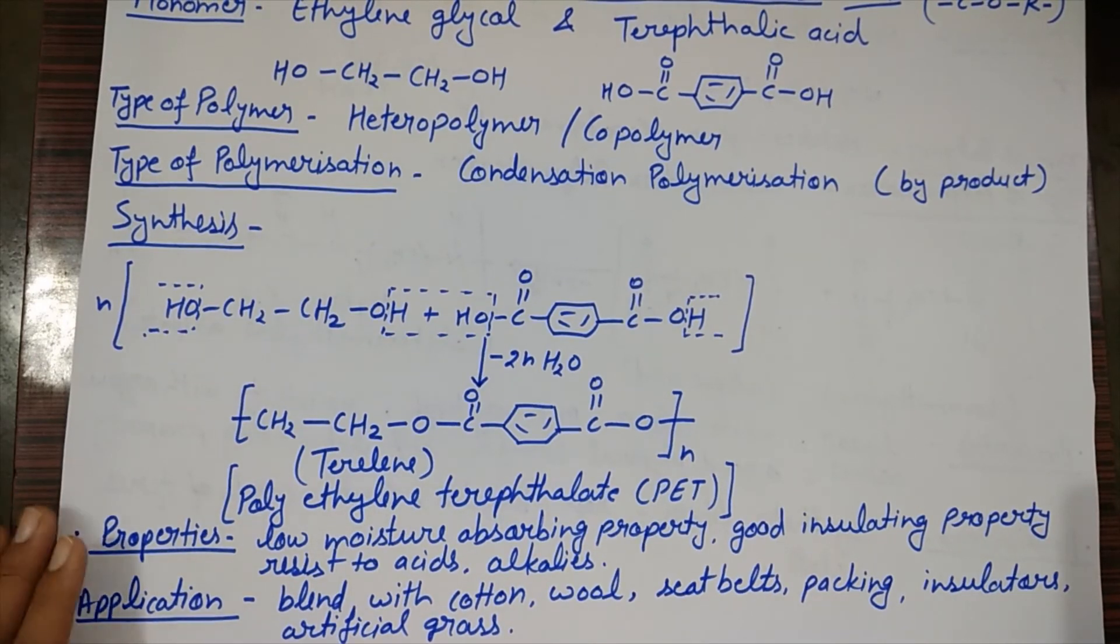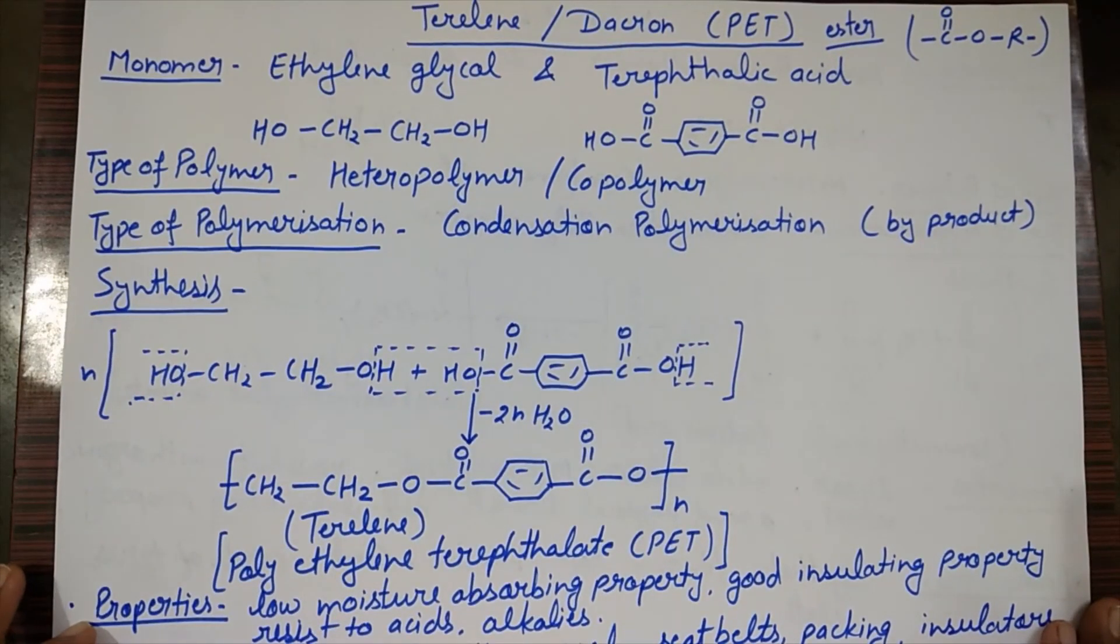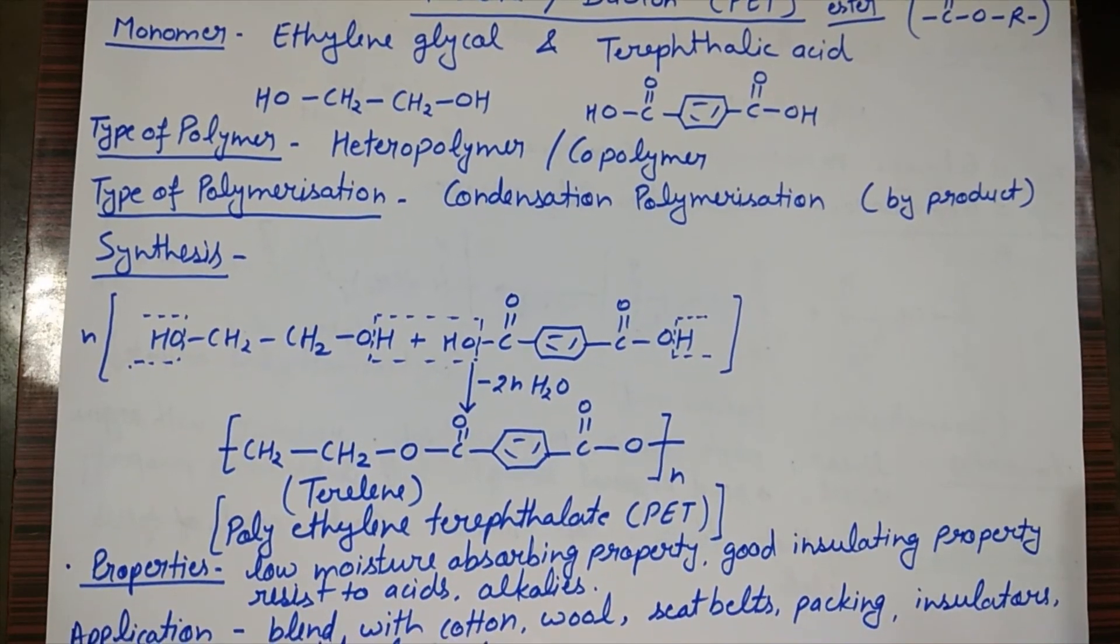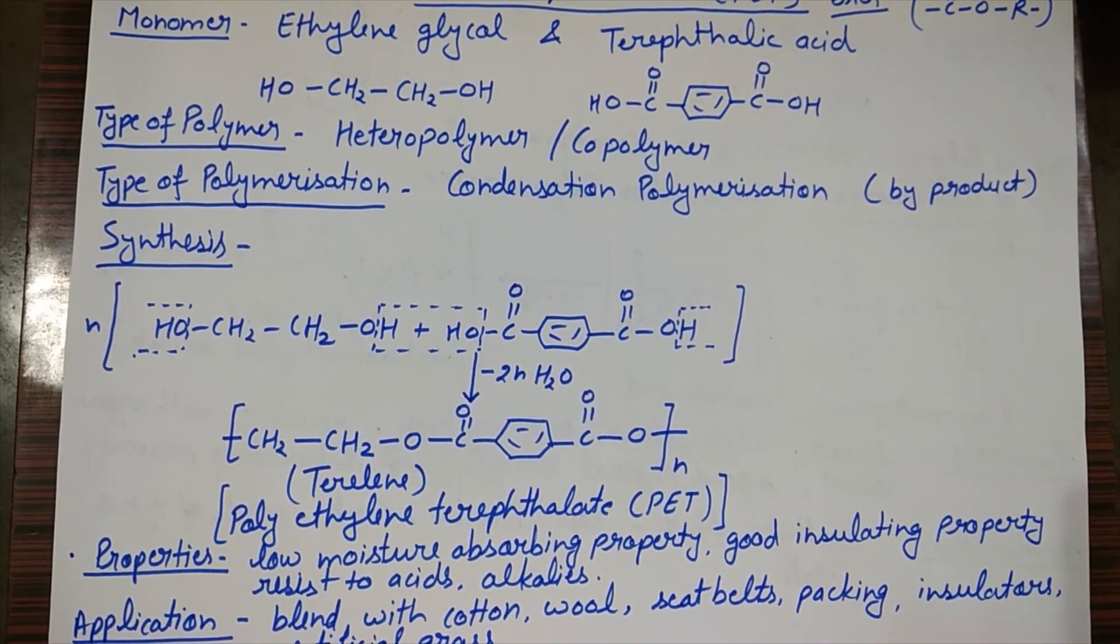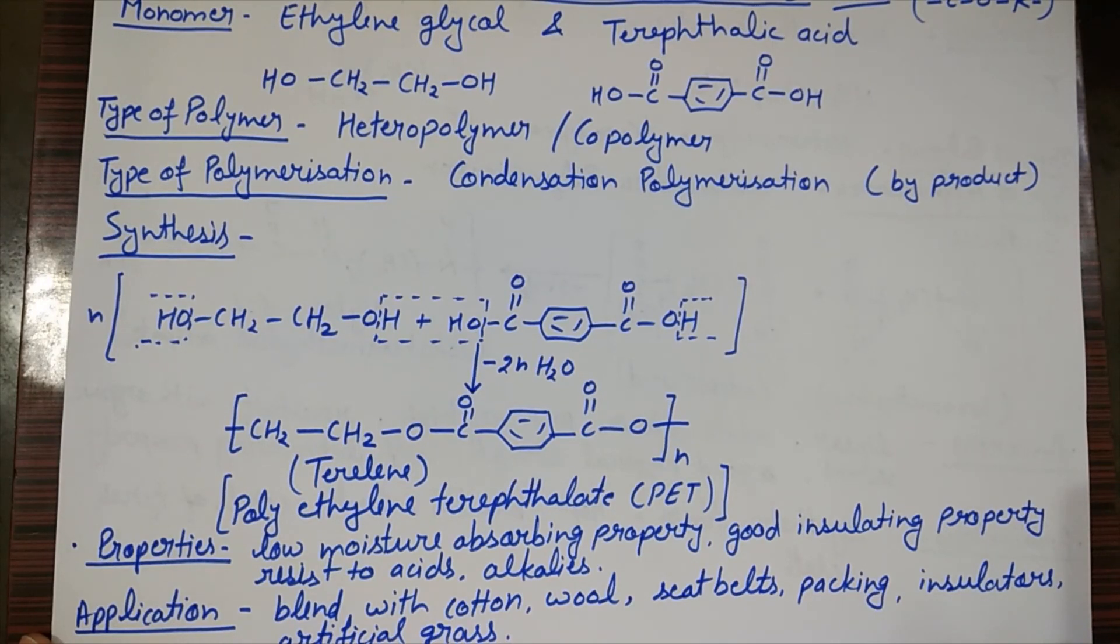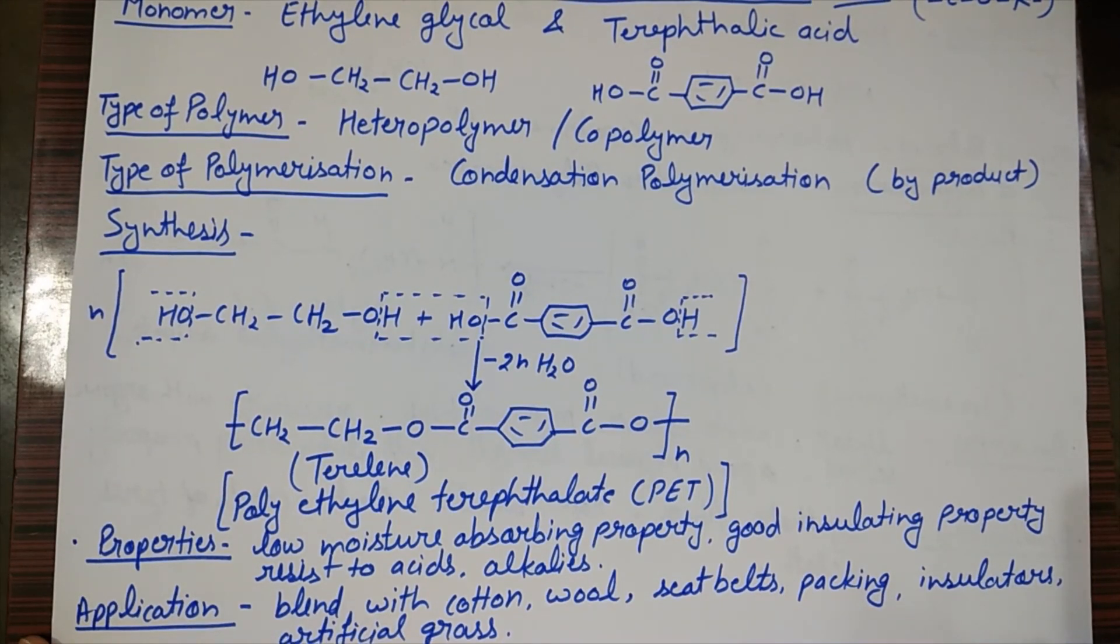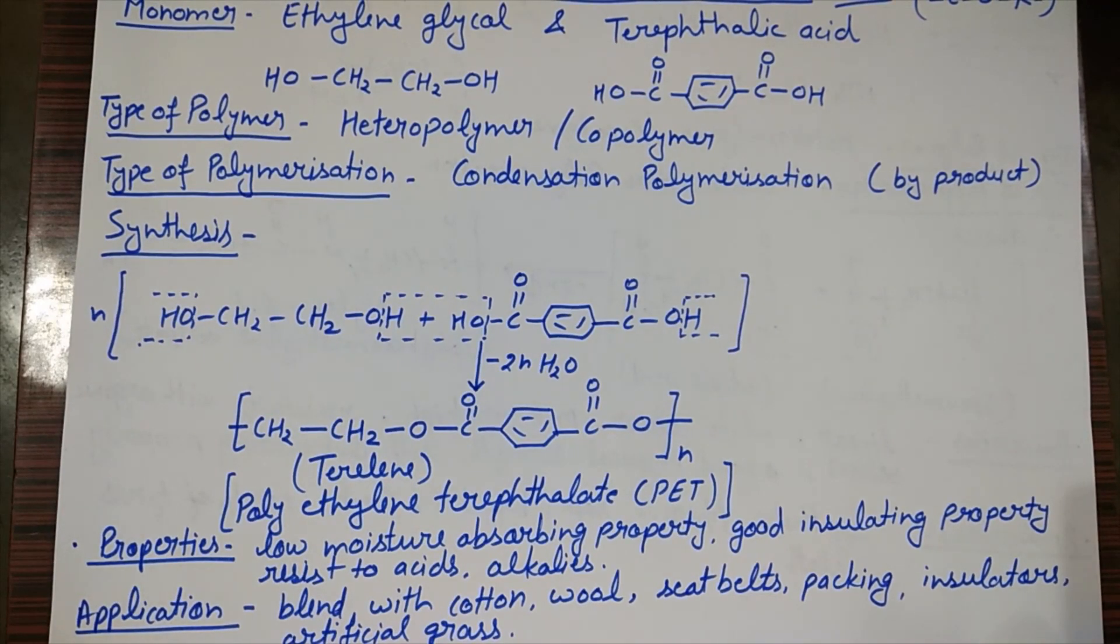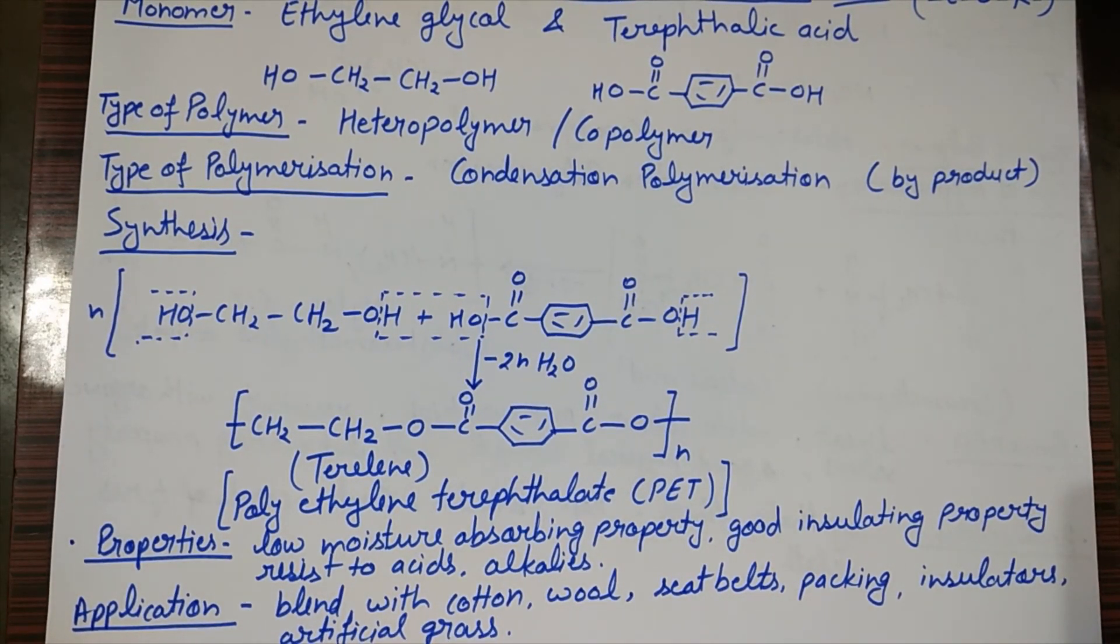So we have three types of synthetic fibers: two polyamides - nylon 6 and nylon 66 - and the third is Terylene, which is in the polyester category. It has two monomer units: ethylene glycol and terephthalic acid. It is a heteropolymer or copolymer. The polymerization is condensation polymerization because it has byproduct formation - water molecules. We also know it as polyethylene terephthalate, or PET. We have studied its properties and applications. I hope you all understand. Our synthetic fiber category is complete. Thank you so much.